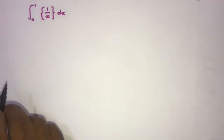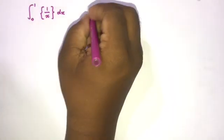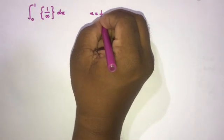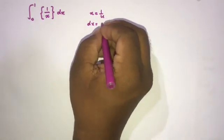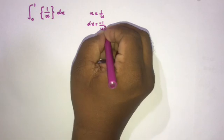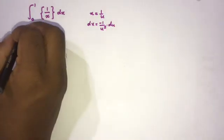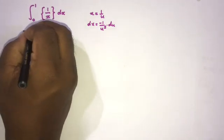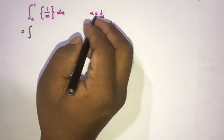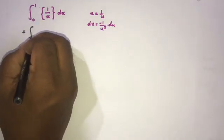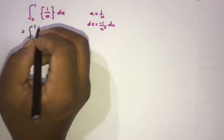First, I am going to use a substitution. If we take x equal to 1 over u, then differentiating gives dx equal to minus 1 over u squared du. Now we substitute and change the limits. When x approaches 0, u approaches infinity. When x approaches 1, u approaches 1 as well.